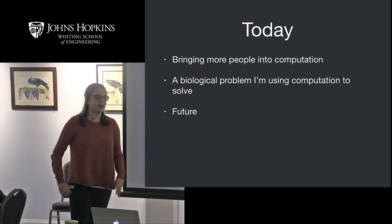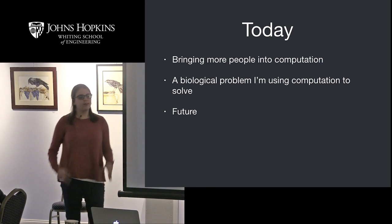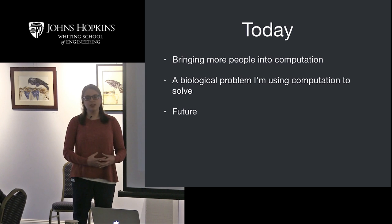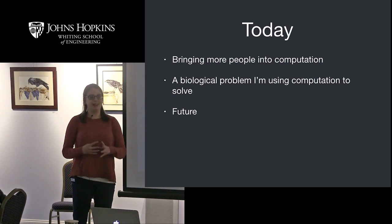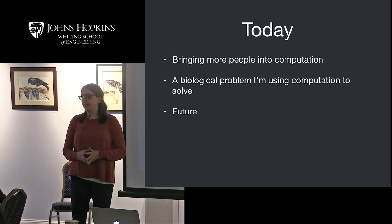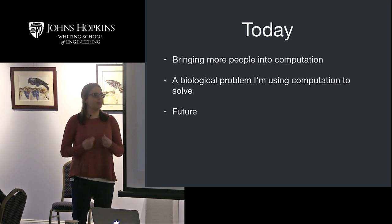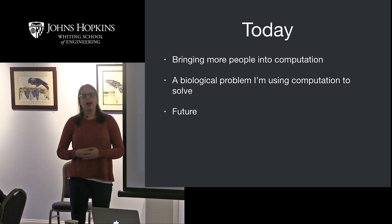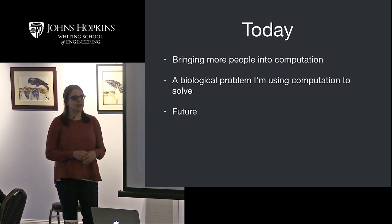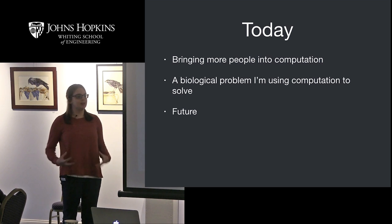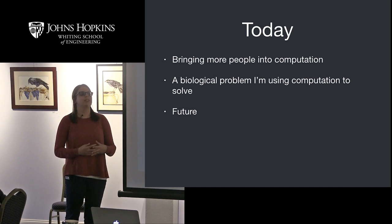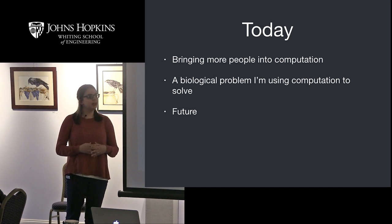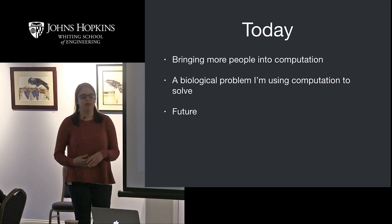Today I'm going to talk about three things: first, bringing people into computation — in order to do this combined biology and computer science thing, we really need people who understand the value of it and can come in with the skill sets to solve problems. Then I'll talk about some of the science I've been doing within the Rosetta Commons to marry these together. And finally, some of the things I envision for the future.